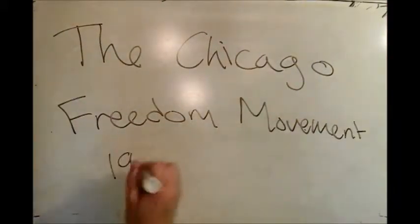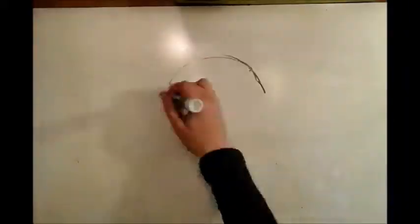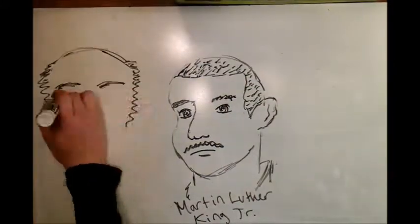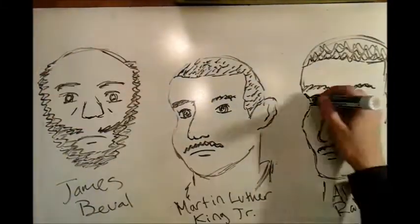The Chicago Freedom Movement, otherwise known as the Chicago Open Housing Movement, was primarily led by three people: Martin Luther King Jr., James Bevel, and Al Rabbe.